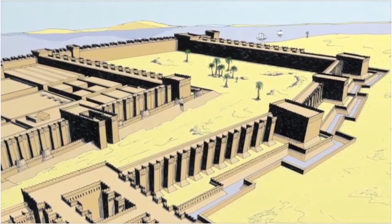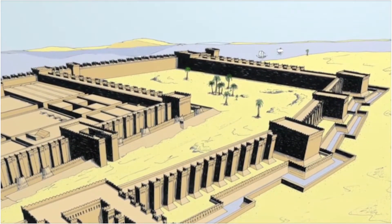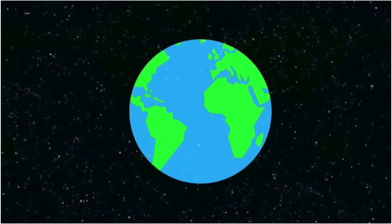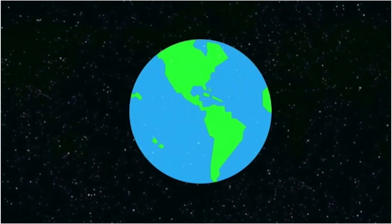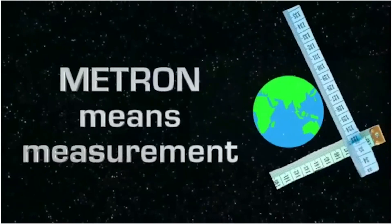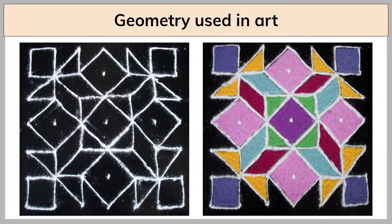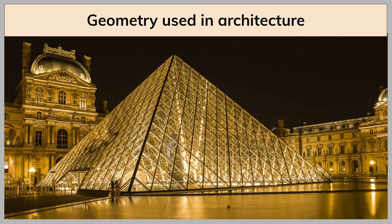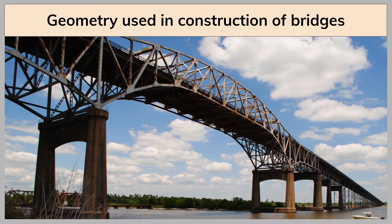This is how geometry, a word of Greek origin, got its name. 'Geo' means earth and 'metron' means measurement. Geometry is widely used in art, design, architecture, construction, and engineering.